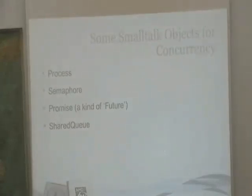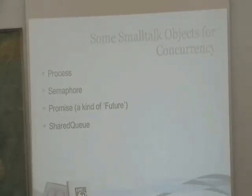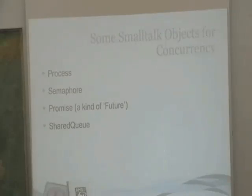In VisualWorks, some of the objects available for concurrency include: you can fork off processes, semaphores, a promise object which is a kind of future, and a shared queue which is essentially a thread-safe collection. So if you're doing a traditional producer-consumer problem, you could run multiple producer processes adding things to a shared queue, and multiple consumer processes removing and processing items from that queue in a thread-safe manner.